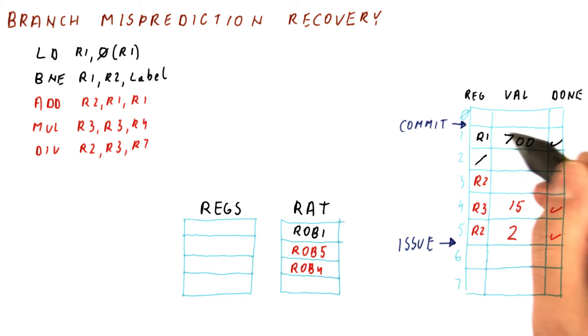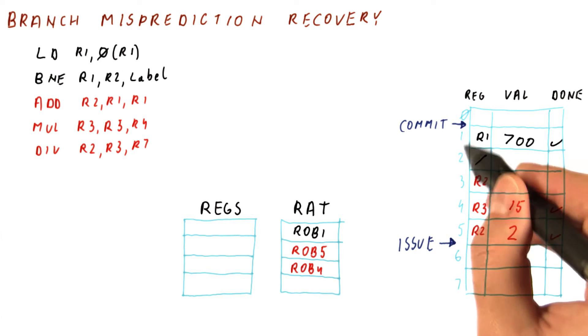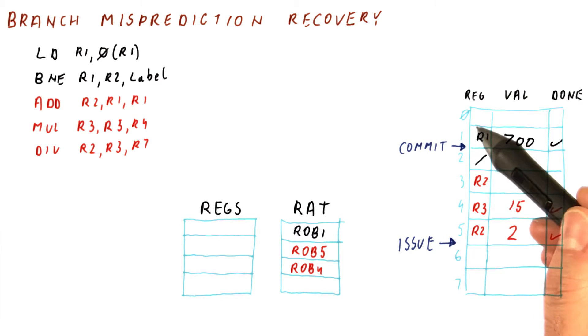Meanwhile, we are going to be checking whether we can commit this instruction, and we can because it's marked as done and it's the next instruction to commit. So we will commit this instruction,